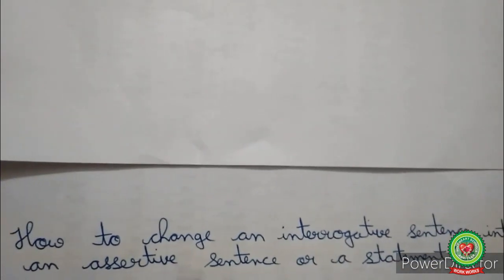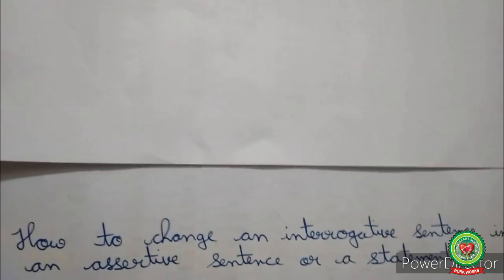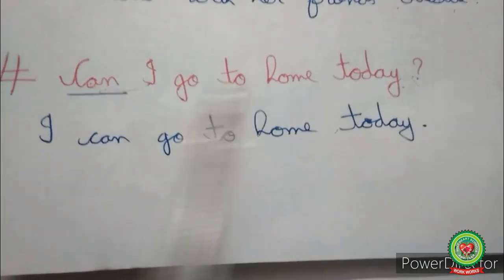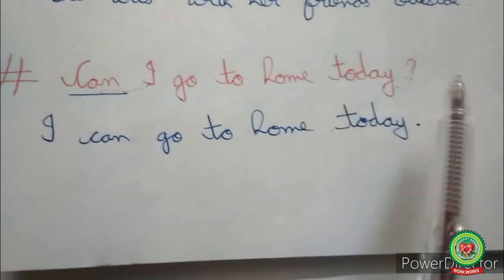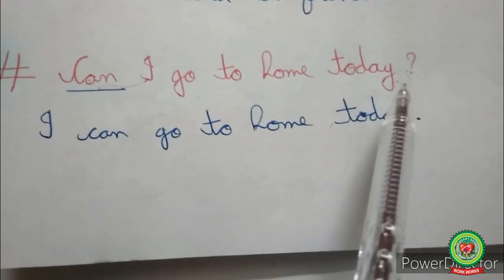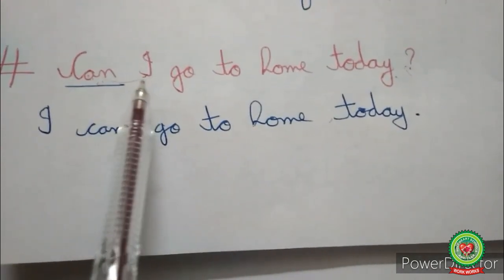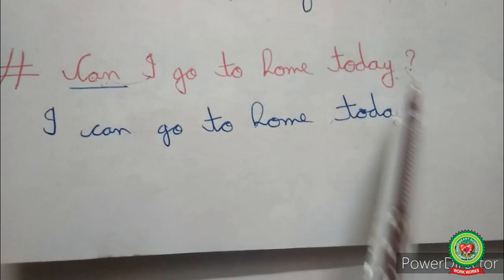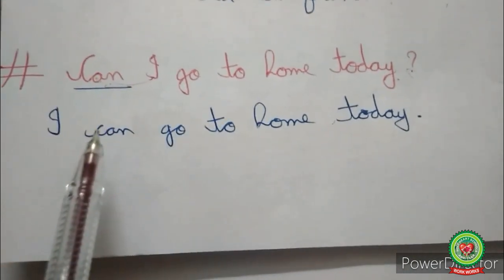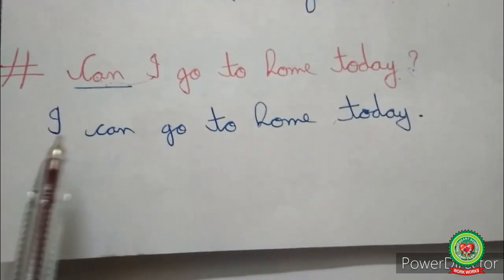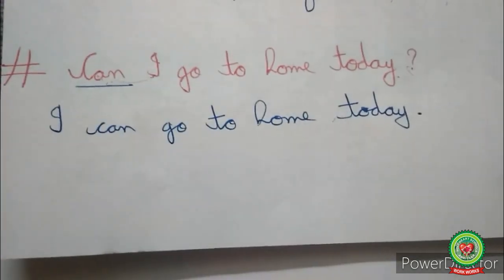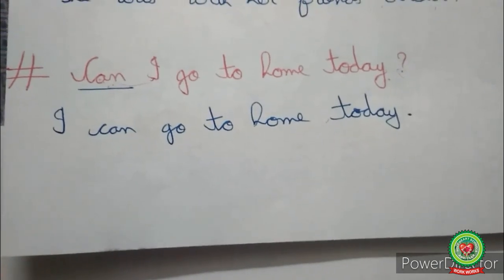So today we have learned how to change an interrogative sentence into an assertive sentence or statement. For example, 'Can I go home today?' is an interrogative sentence with the helping verb at the beginning and a question mark at the end. We place the helping verb after the subject 'I,' replace the question mark with a full stop, and the assertive statement is: 'I can go home today.' Students, I hope you all understood the chapter. Follow the schedule, do your homework, and complete all the exercises. Thank you.